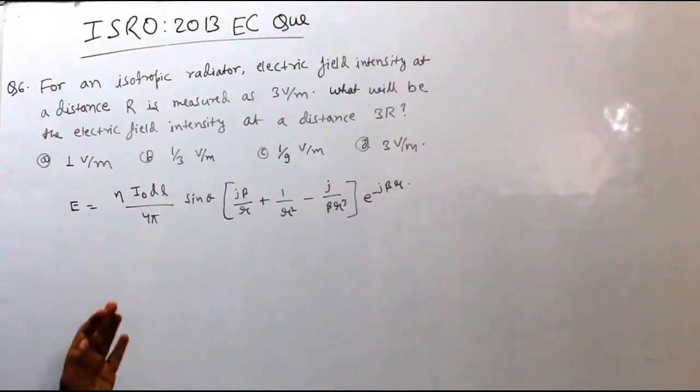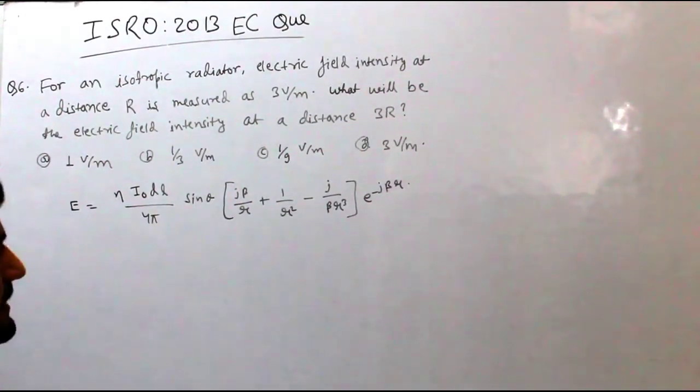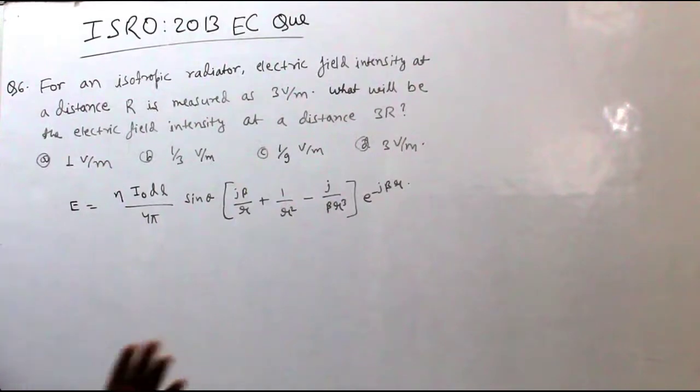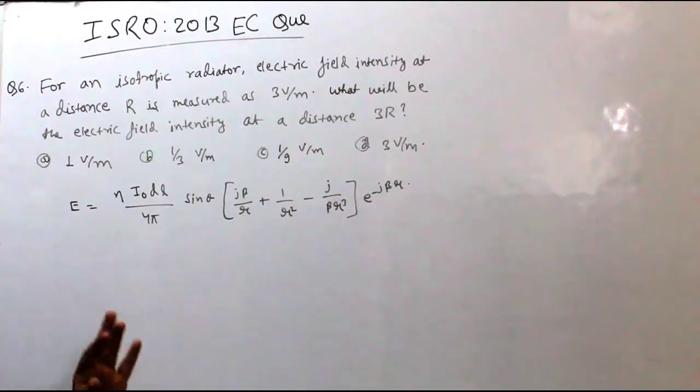This particular E theta component in spherical components. So, the E phi component is already very low. E phi will be 0 and E R will be something 1 by R square ratio.